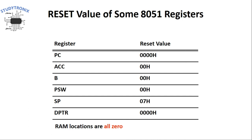When a reset signal is given to the CPU, the register values are: the Program Counter (PC) is set to 0000h, the Accumulator is set to 00h, the B register is set to 00h, the PSW (Program Status Word) is set to 00h, and the Stack Pointer is set to 07h. So except for the Stack Pointer, all registers are initialized to 0. Also, all RAM locations are made 0 when a reset signal is applied.